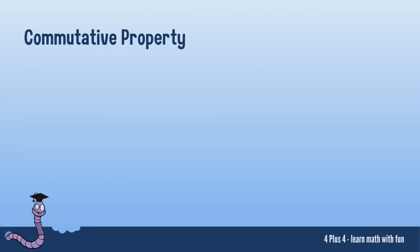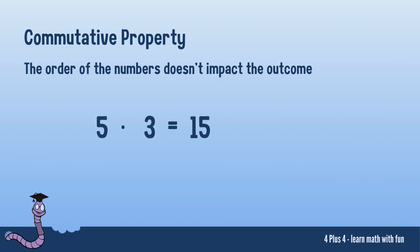Now, another interesting property of multiplication is the commutative property. This means that the order of the numbers doesn't affect the result. For instance, 5 multiplied by 3 is the same as 3 multiplied by 5. It's like flipping the factors without changing the outcome.